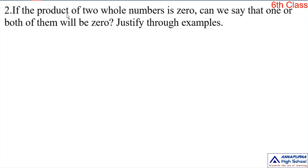We go to the next problem. If the product of two whole numbers is 0, can we say that one or both of them will be 0? Justify through examples. Let us see some examples. We take two whole numbers and multiply them.